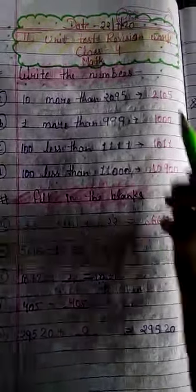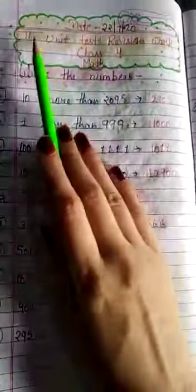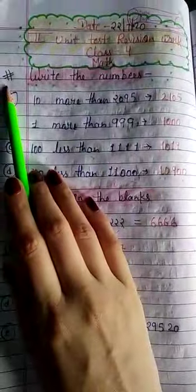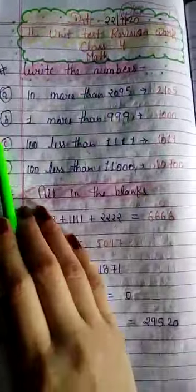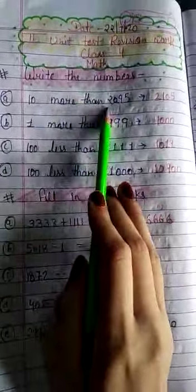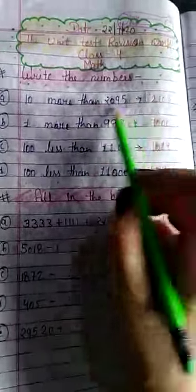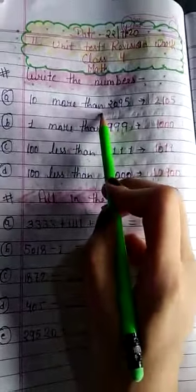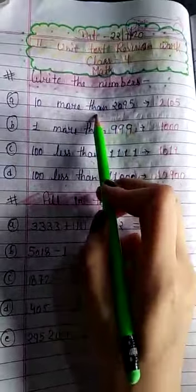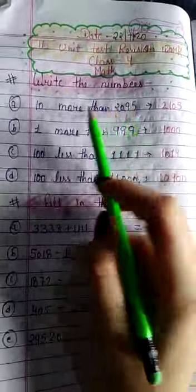Good morning class 4. Today we will start your revision work for second unit test. First question, write the numbers. In this one, 10 more than 2095. Now, more than means plus. If we are less than, we are making minus.